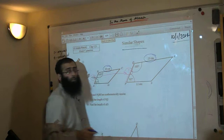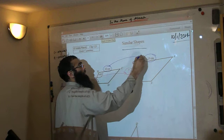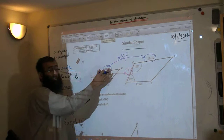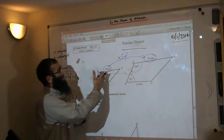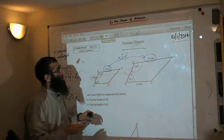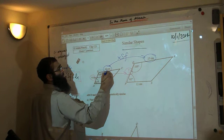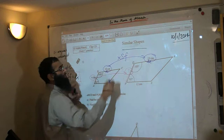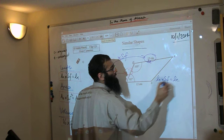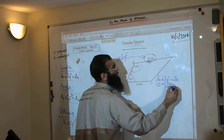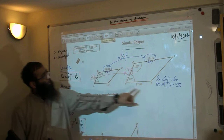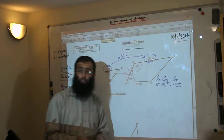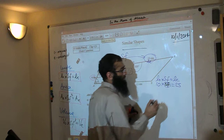To find the scale factor, we need two corresponding lengths that we know. We'll use 10 and 25, because we know this length became this length. The formula is: length of original times the scale factor equals length of the enlarged. The original is 10, and the enlarged is 25. So: 10 times the scale factor equals 25. Dividing 25 by 10 gives us a scale factor of 2.5.